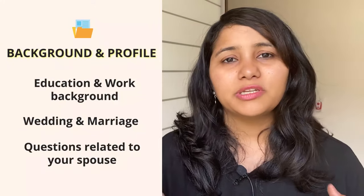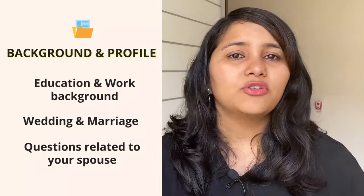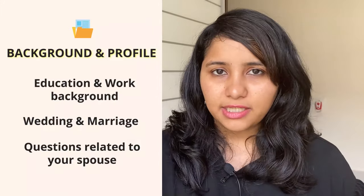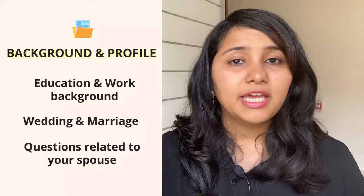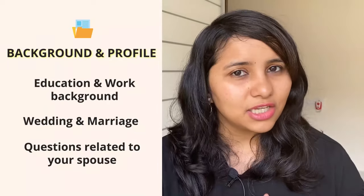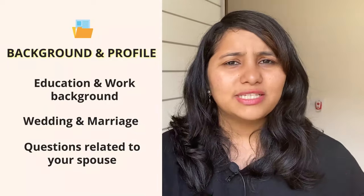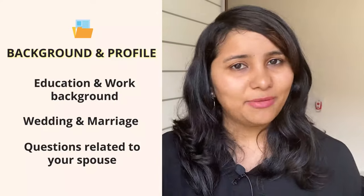The third set of questions are those related to your spouse, and this is especially important if you are appearing for the F2 visa alone. You could be asked what your spouse is doing in the US — which university they are studying at, what the program is, how many years are left. If they are working on OPT period, you can be asked where they work, what their salary is, and their designation. Essentially, basic questions that any spouse would know can be asked under the profile and background section.